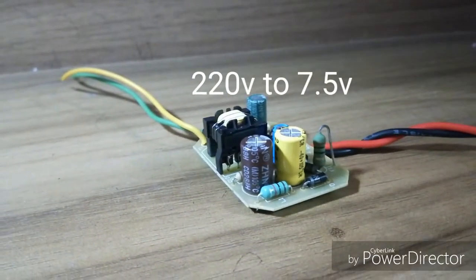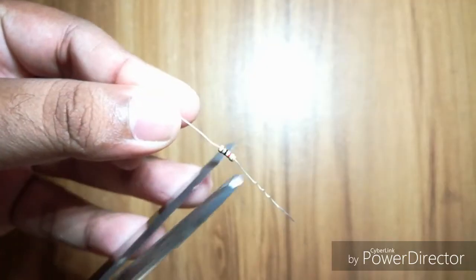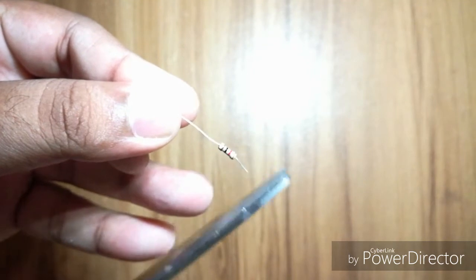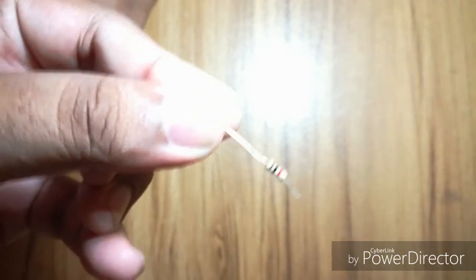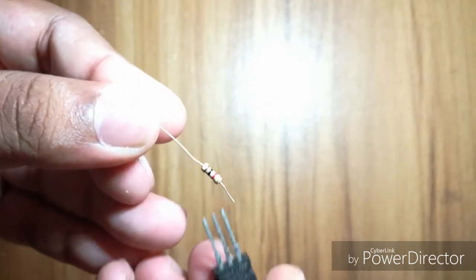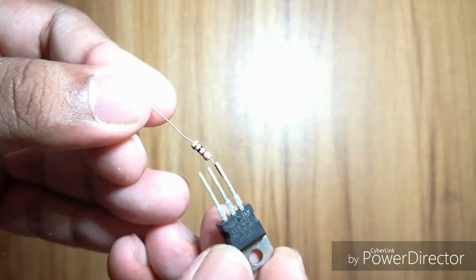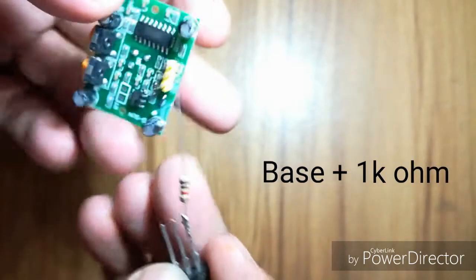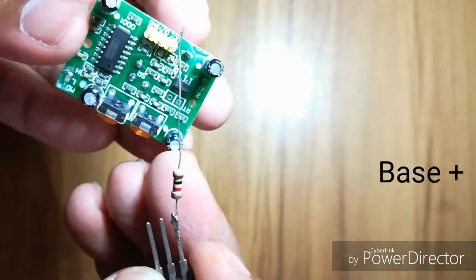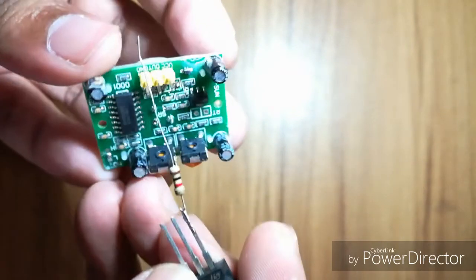First, I'm going to solder the one kilo-ohm resistor to the base of the transistor. The other end of the resistor goes to the output pin, which is the middle pin of the sensor.